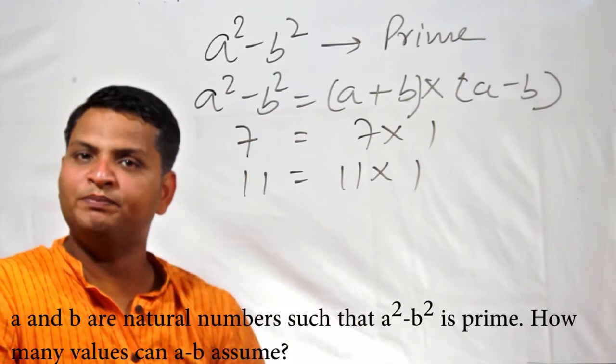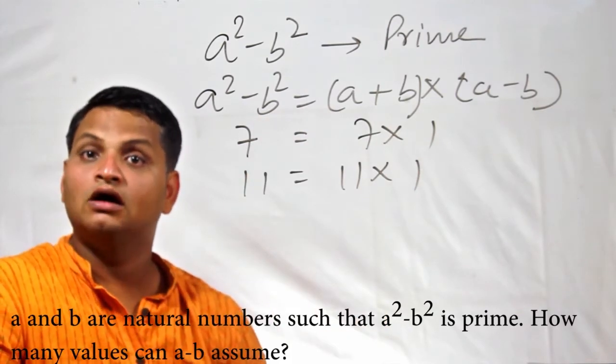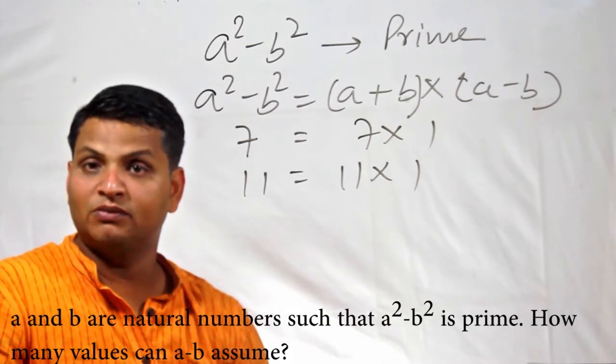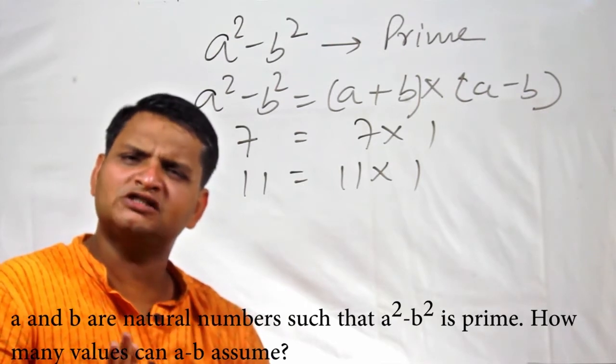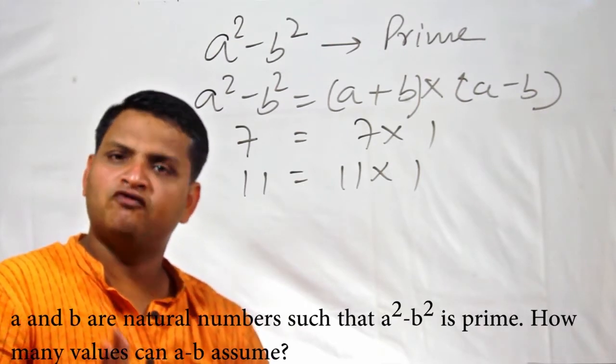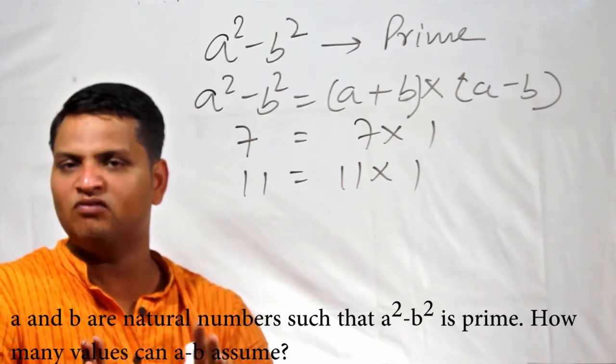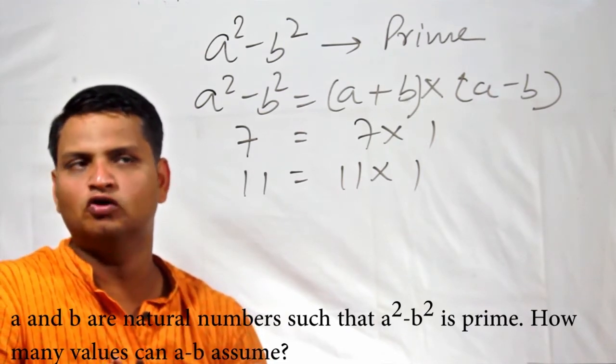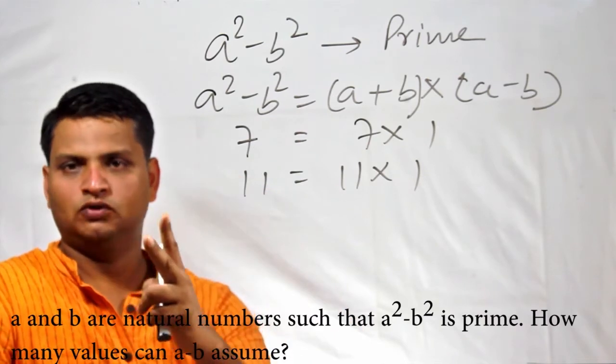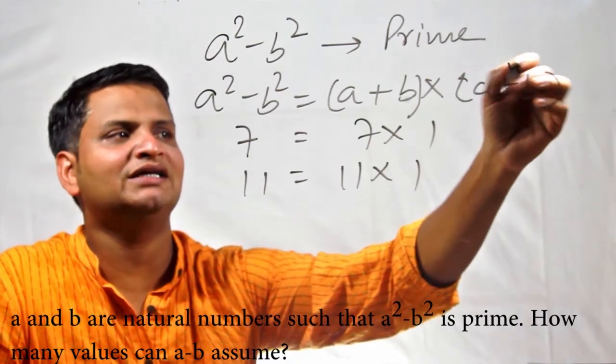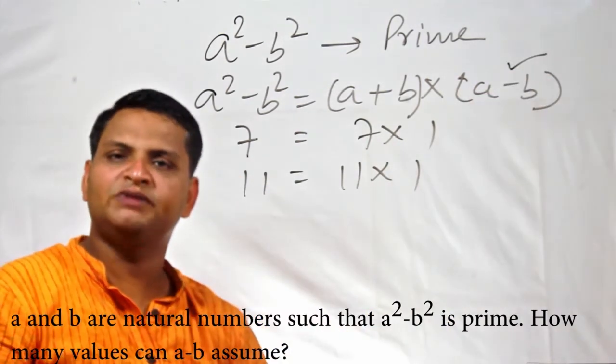Since a and b are given as natural numbers, can the value of a + b be 1? No. If a and b are natural numbers, the minimum value which a + b can assume is 2. So, which means that a - b will always be 1.